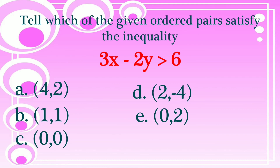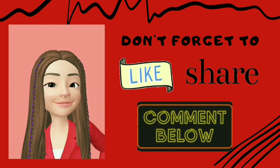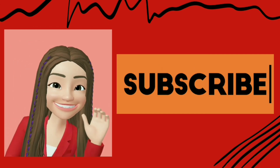So the answer to which ordered pairs satisfy the inequality 3x minus 2y is greater than 6: the solutions are letter A, which is (4, 2), and letter D, which is (2, negative 4). The rest are not solutions. I hope you learned something today. It's that simple to determine whether an ordered pair is a solution of an inequality — just substitute the ordered pairs into the variables x and y. If it results in true, it is a solution; if false, it is not. Thank you for watching! Don't forget to like, share, comment, and subscribe to my channel. Until next time, bye!